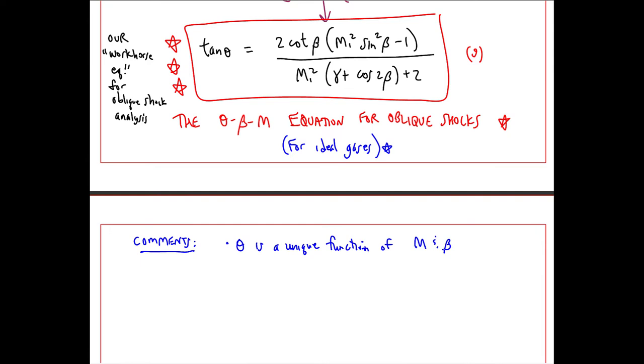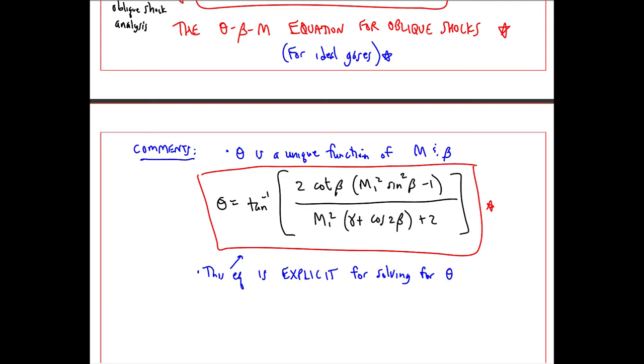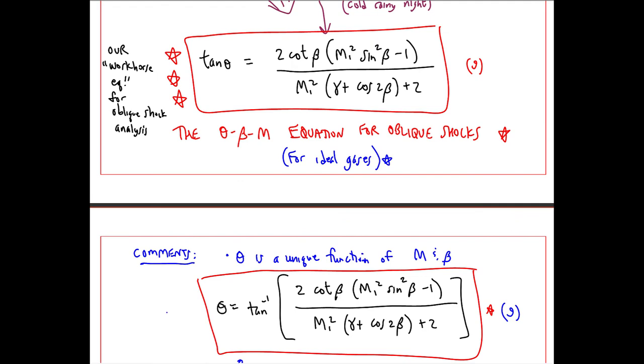I'll give some comments about the theta beta M equation here. First, theta is a unique function of M and beta. So if we pick some beta and some M, remembering that this is M1, we can get theta. Explicitly, theta is the arctangent of the quantity on the right. In other words, this equation is explicit for solving for theta. By the way, I'll call this equation 9 as well since it's really no different from our first equation 9.